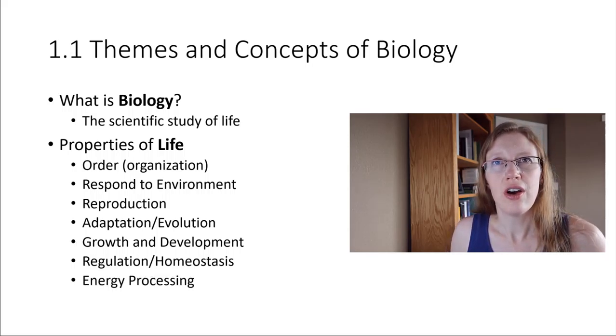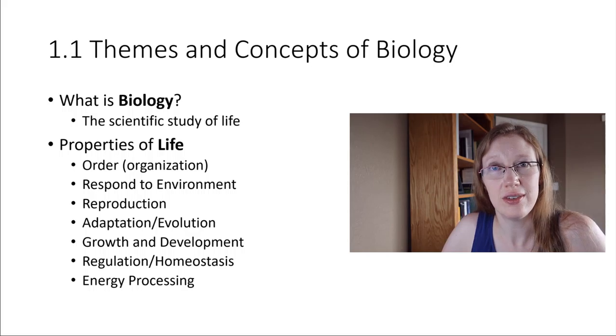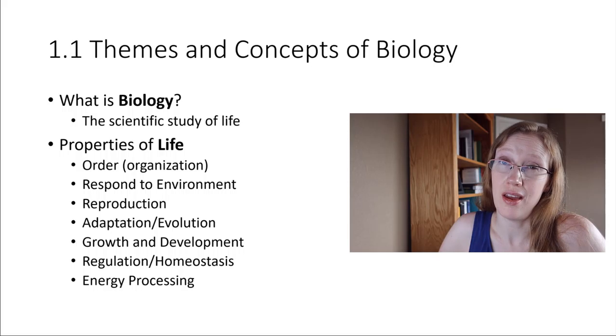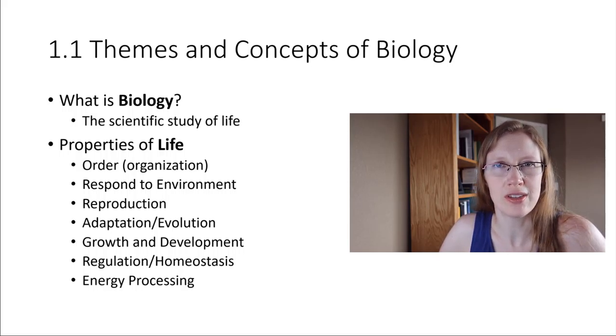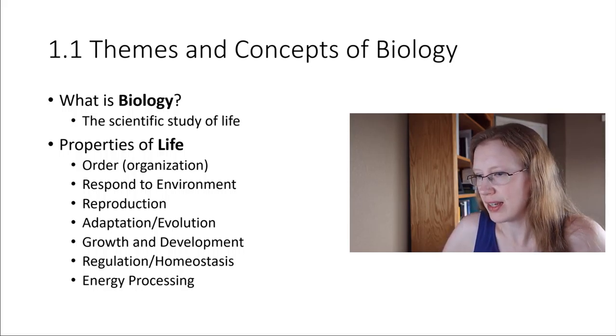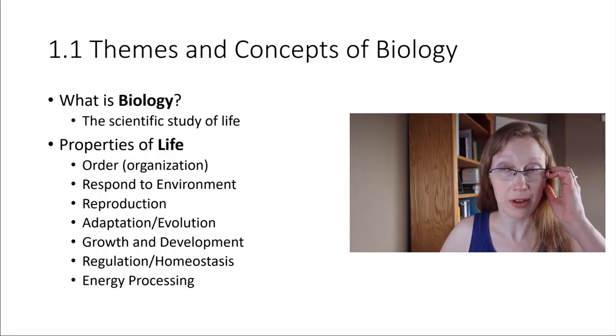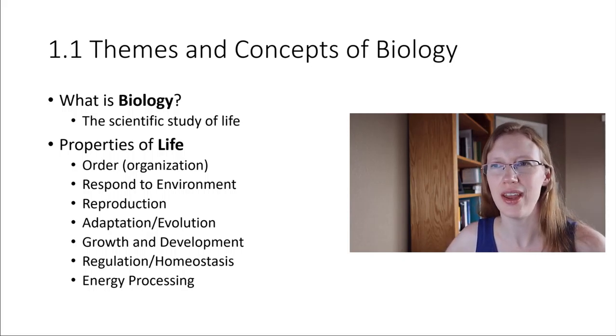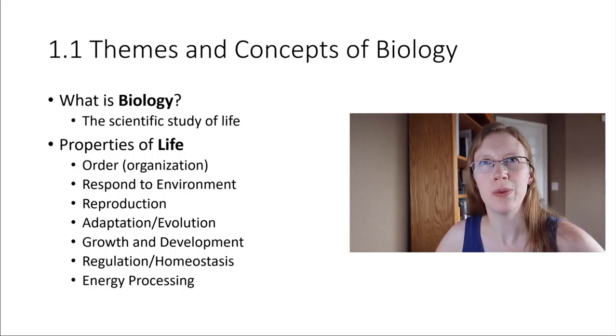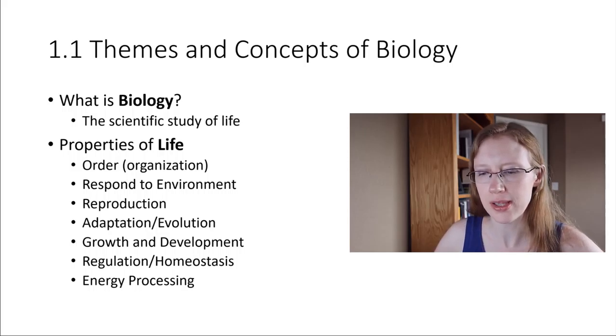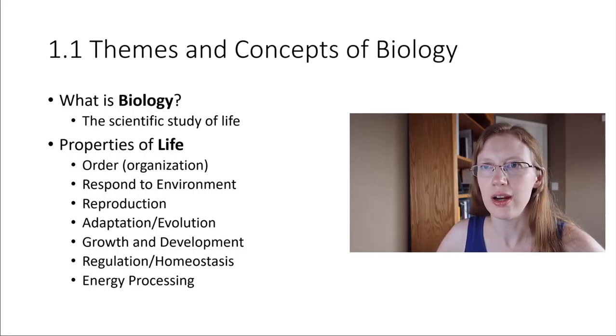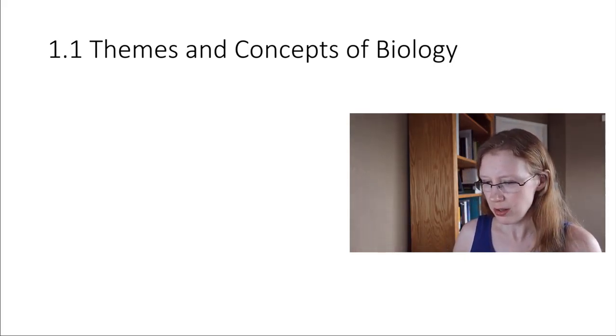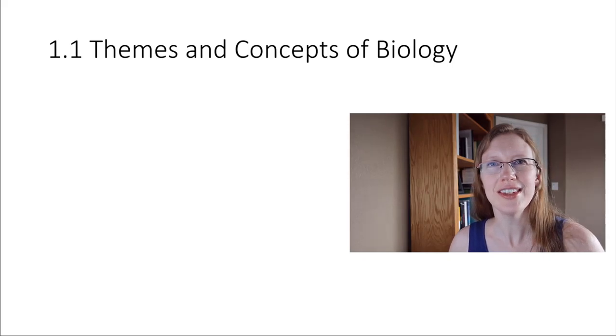Energy processing. All living things require energy to do what they do. Ultimately, that energy comes from the sun. Plants can capture the sunlight's energy, and then things like animals or people can eat those plants and take the energy in that way. Energy comes in different forms. We'll be talking about that later on. But all living things require energy, and they're capable of processing that energy for metabolism, for being able to carry out different chemical reactions in the body.